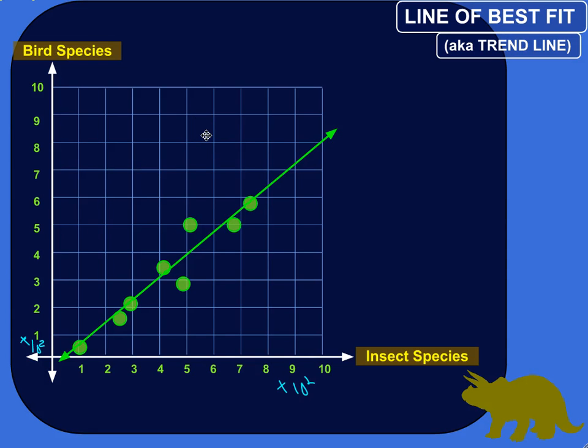So, I could look at this, I could create this trend line or this line of best fit. And then ask, what if there were an island where there's a thousand different insect species? About how many bird species can I expect to find if this relationship holds true? Well, I didn't actually find an island with a thousand different insects. I don't physically know how many bird species would be correlated with that number of insect species. But I can predict based on my line of best fit.